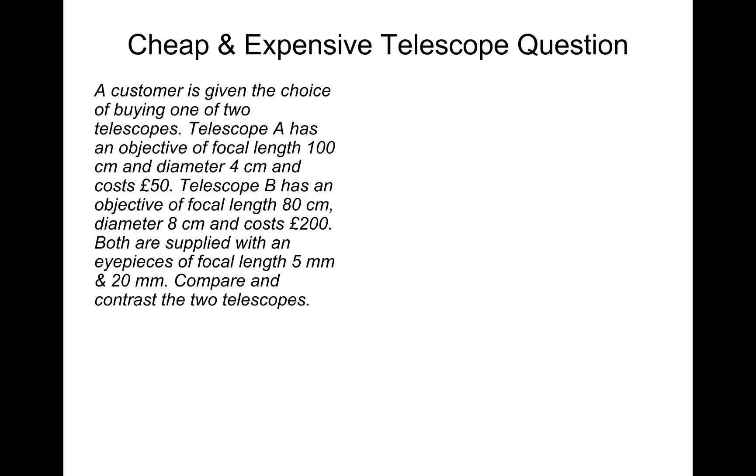A customer is given the choice of buying one of two telescopes. Telescope A has an objective of focal length 100 centimeters and diameter 4 centimeters and costs 50 pounds. Telescope B has an objective of focal length 80 centimeters, diameter 8 centimeters, and costs 200 pounds. Both are supplied with eyepieces of focal length 5 mm and 20 mm. Compare and contrast the two telescopes.